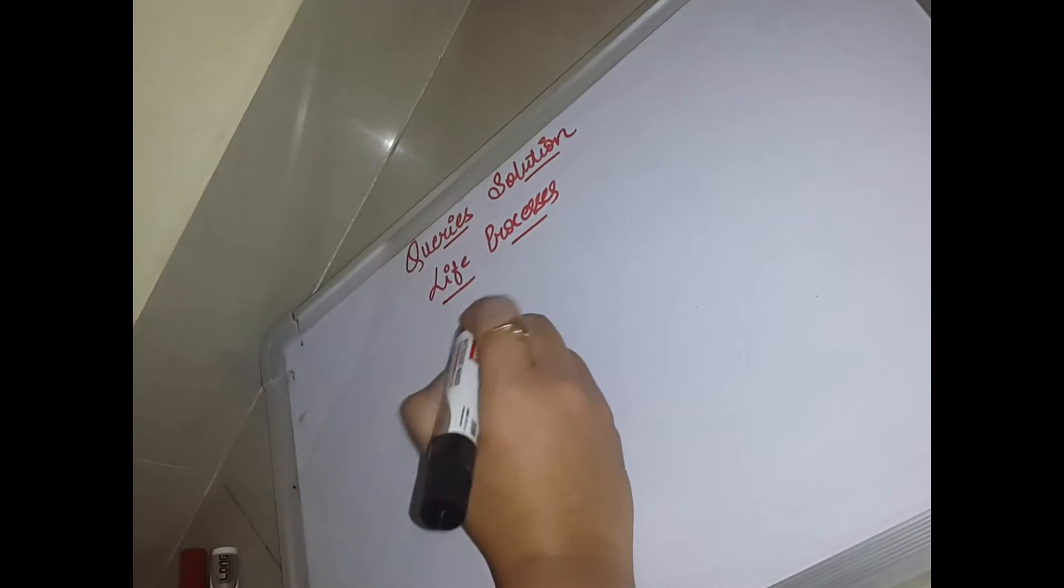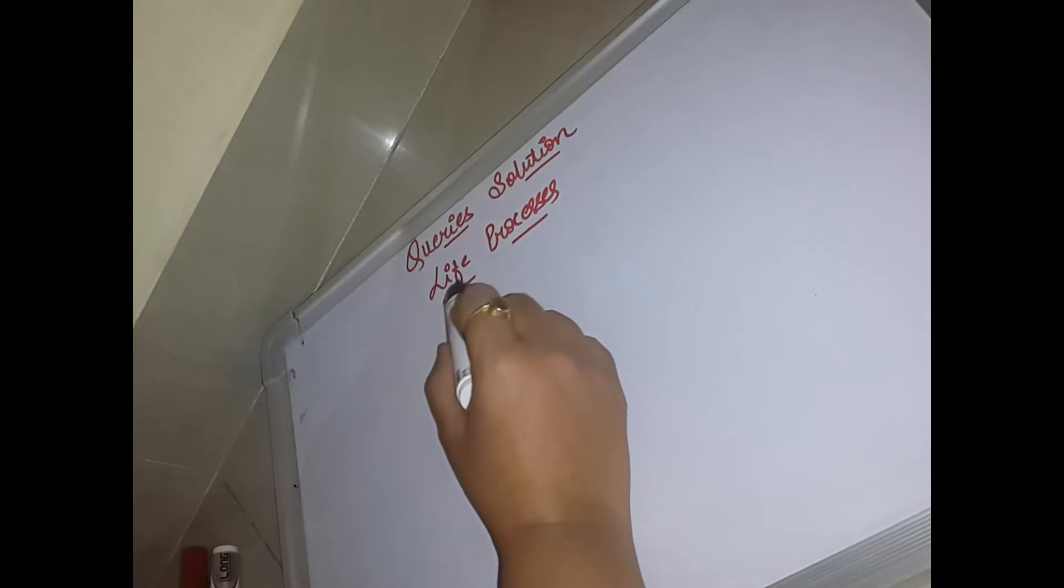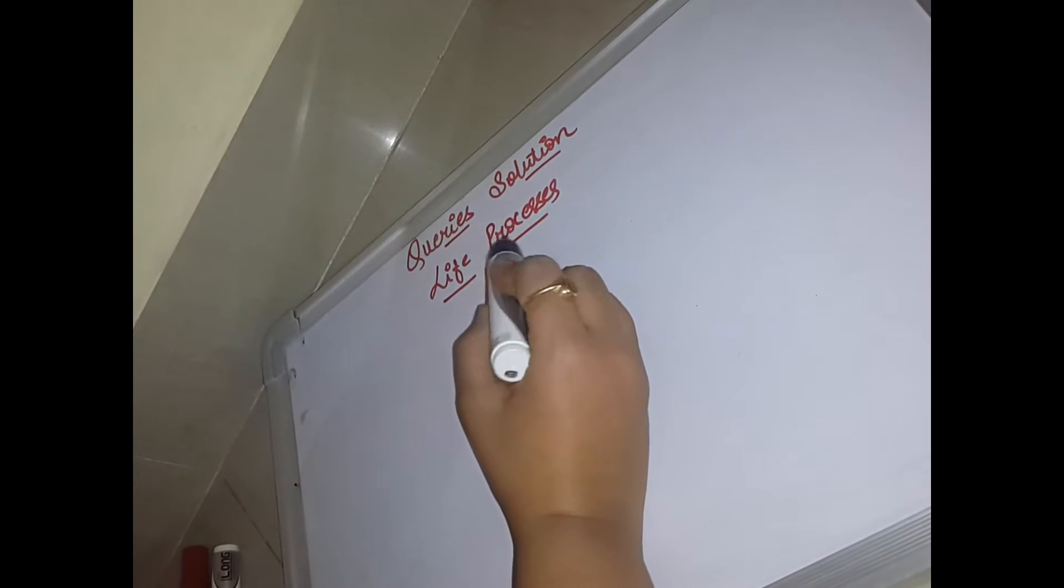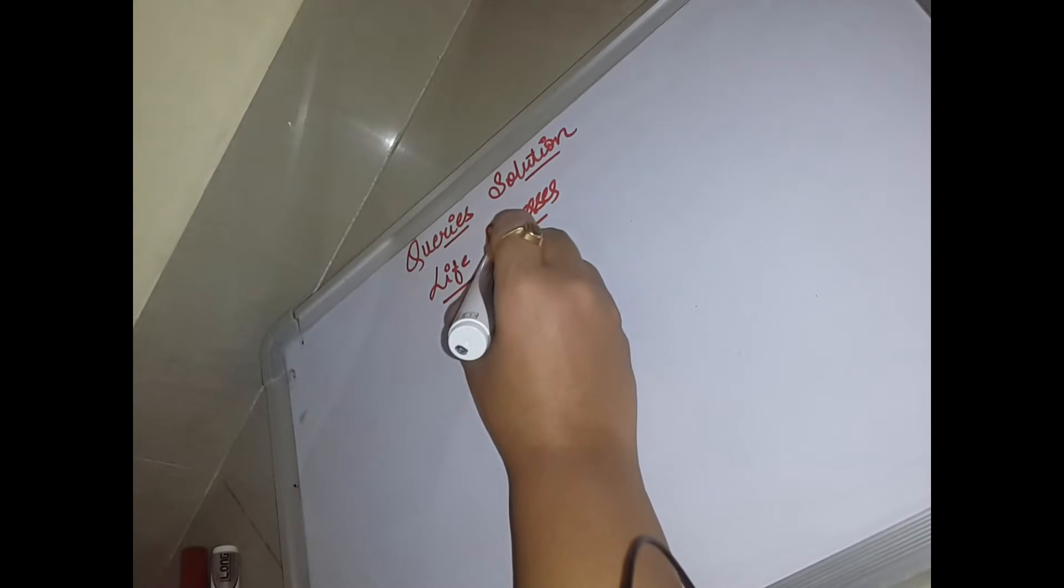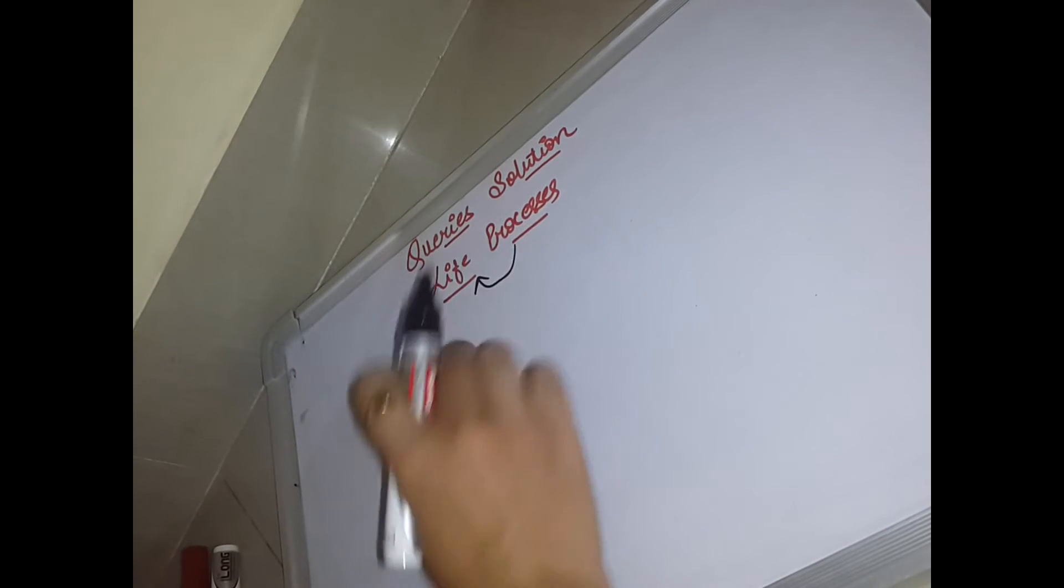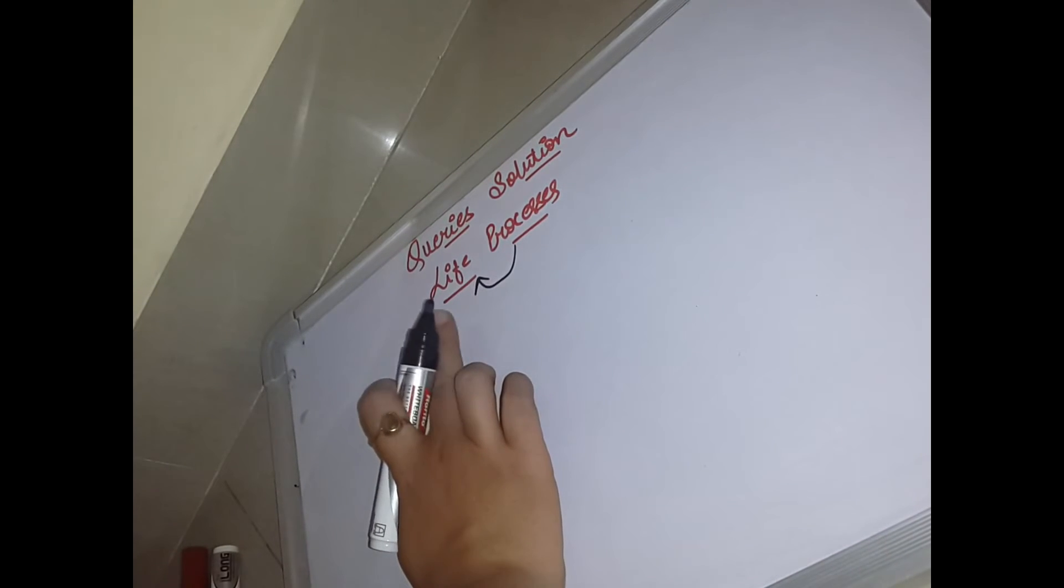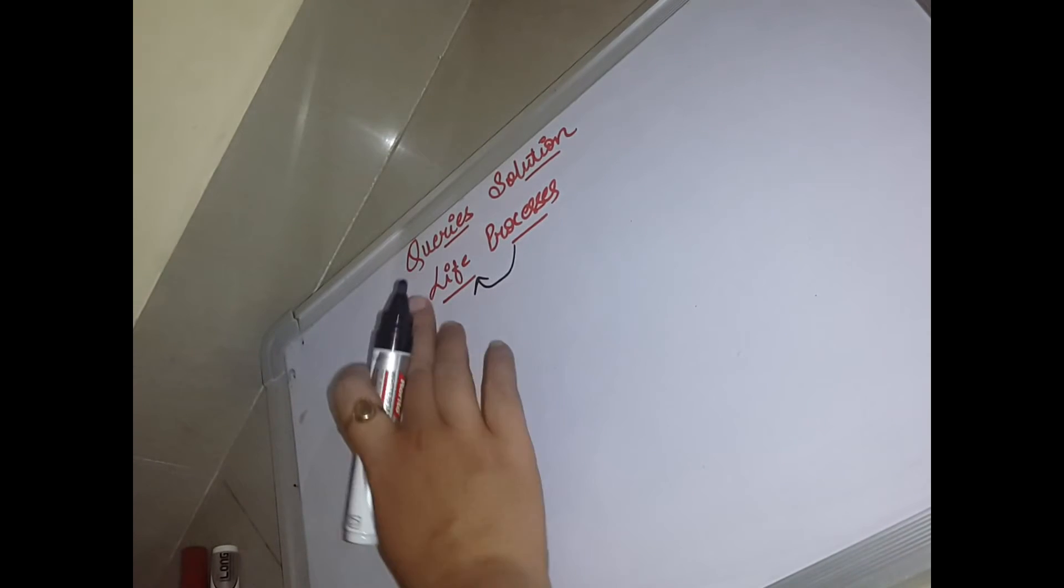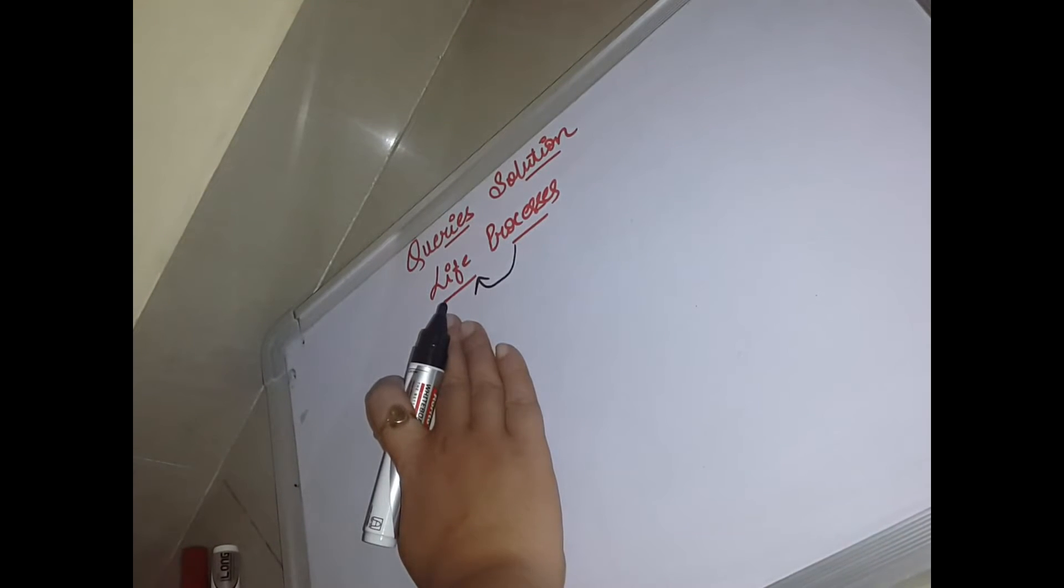Alright students, so if I will ask you what is the meaning of these two terms, that is life and processes. So what do you mean? Maybe you can understand that some of these processes which are very important to live life. Without these processes we will not live a healthy life. We call these life processes. So you can think about which things without which we will not live.